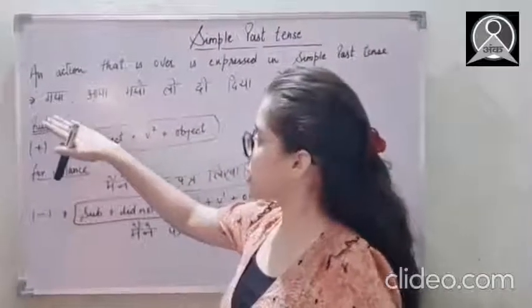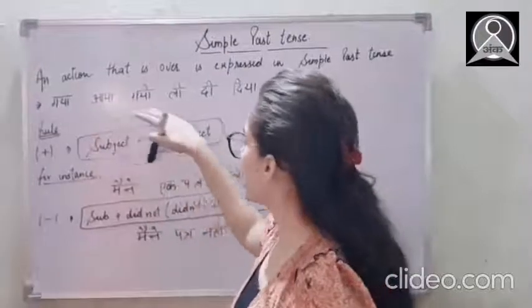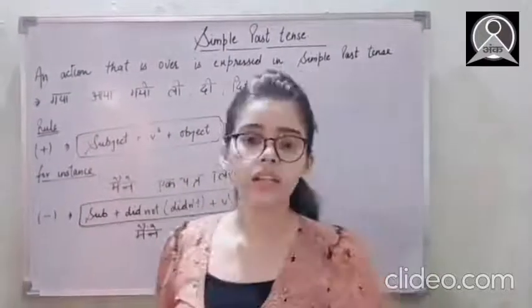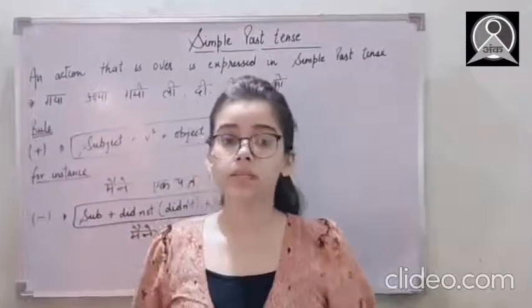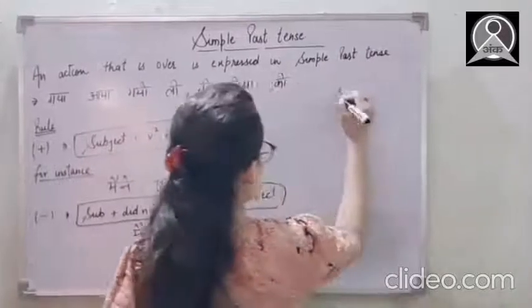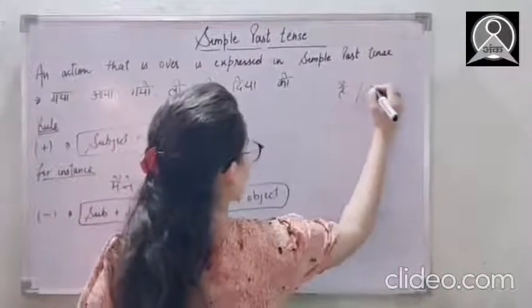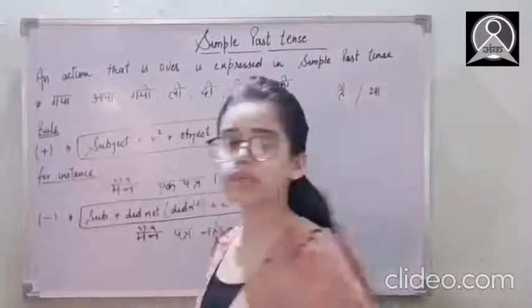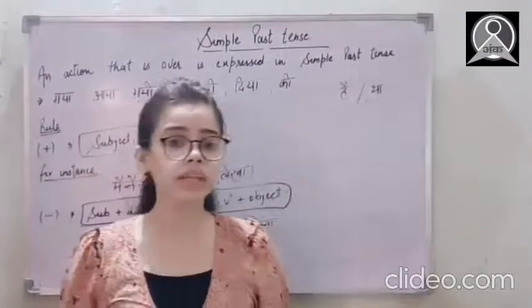And here these are the identities. It carries gaya, aya, gai, li, di, dia, ki, etc. It never carries hai or tha at the last of these sentences. Please don't get confused.